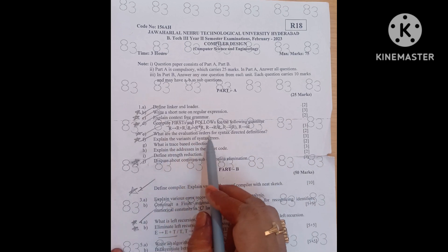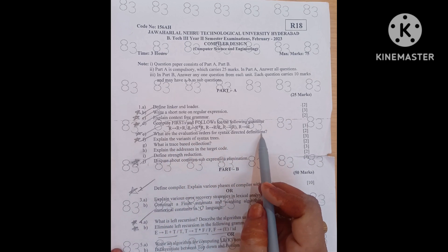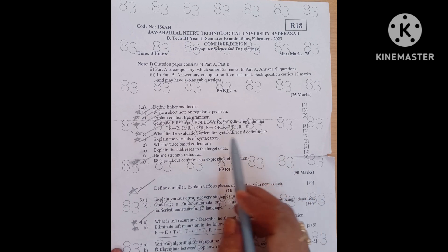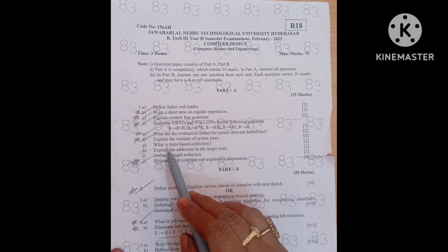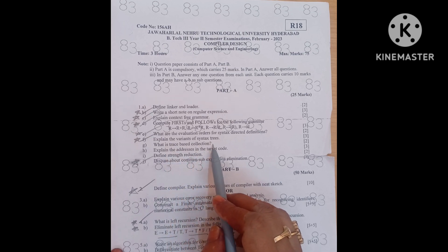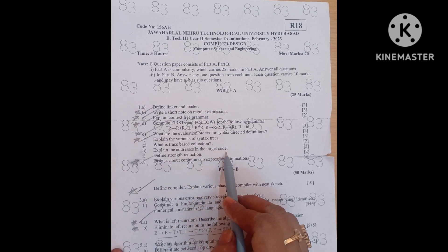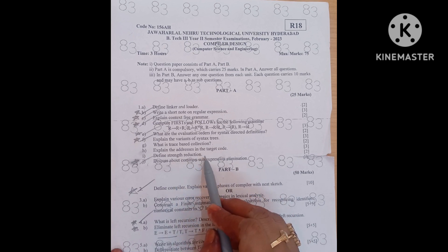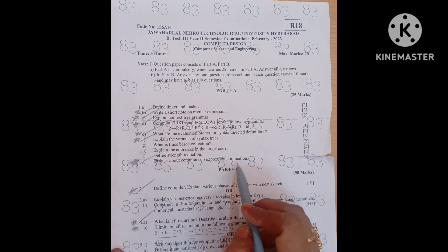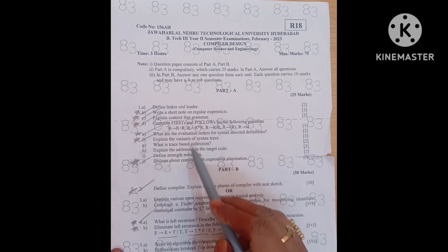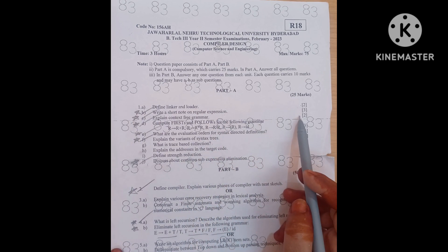Next one is what are the evaluation orders for syntax directed definitions SDD. Next, explain the variant of syntax trees. What is trace based collection? Explain the addresses in the target code. Define strength reduction and discuss about common sub expressions elimination. These all are the short answer questions for 25 marks.